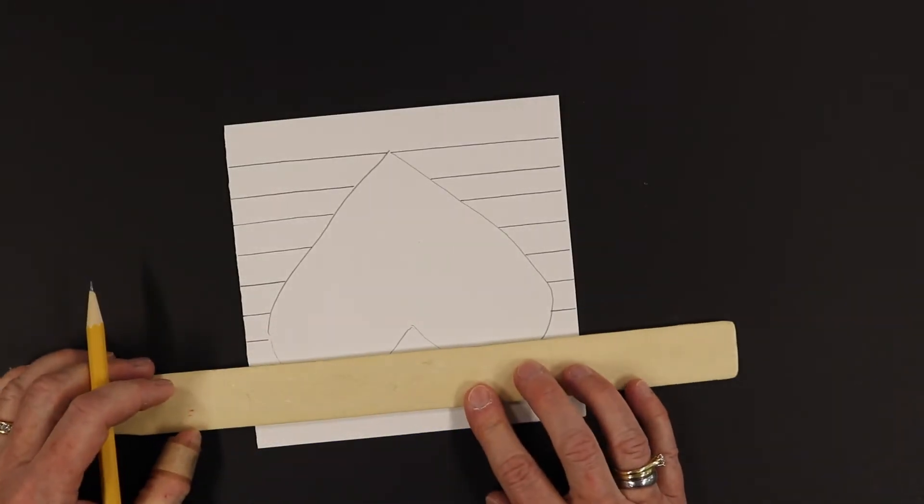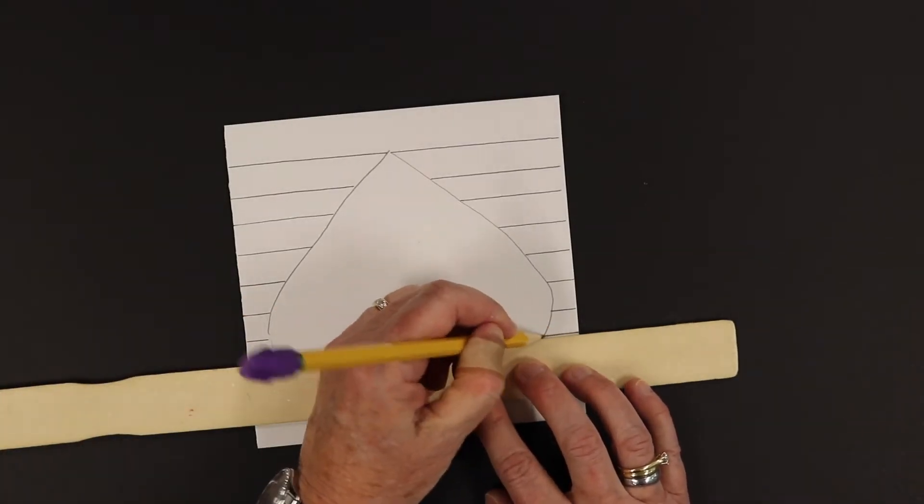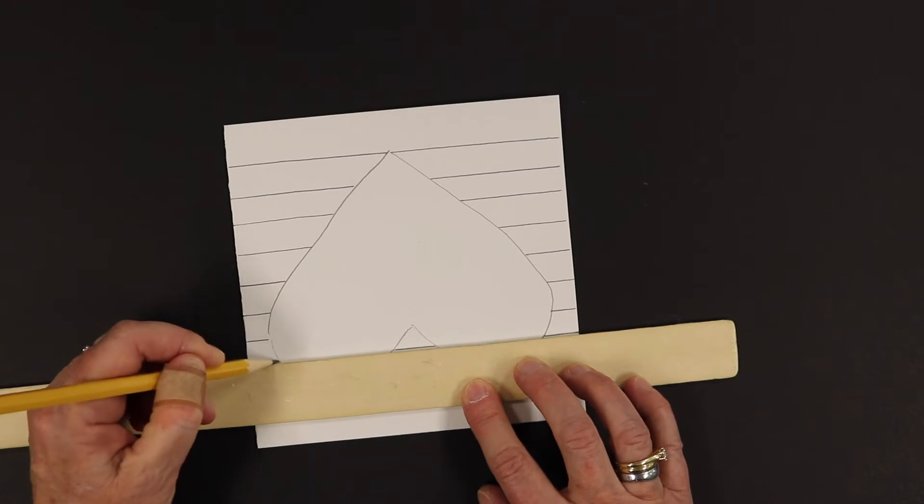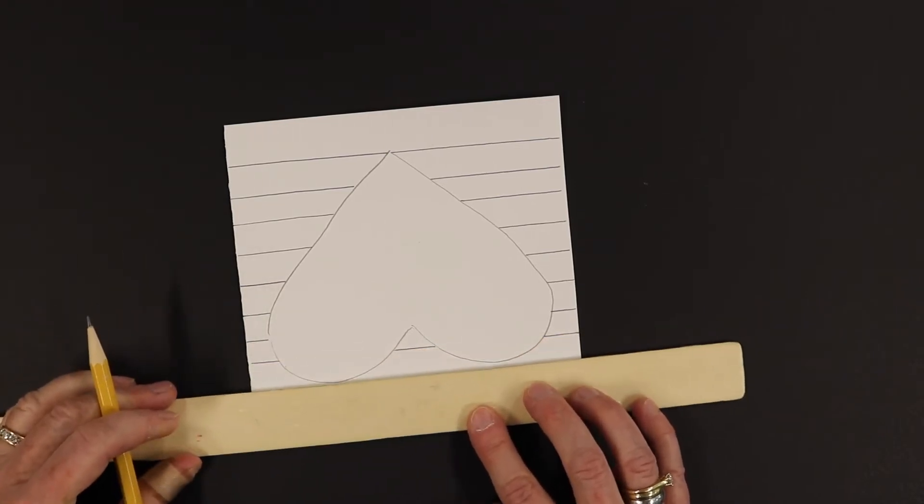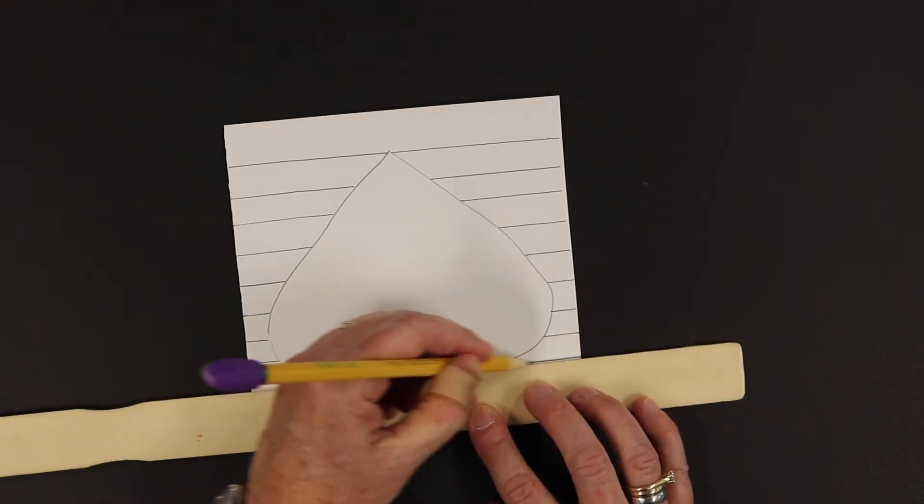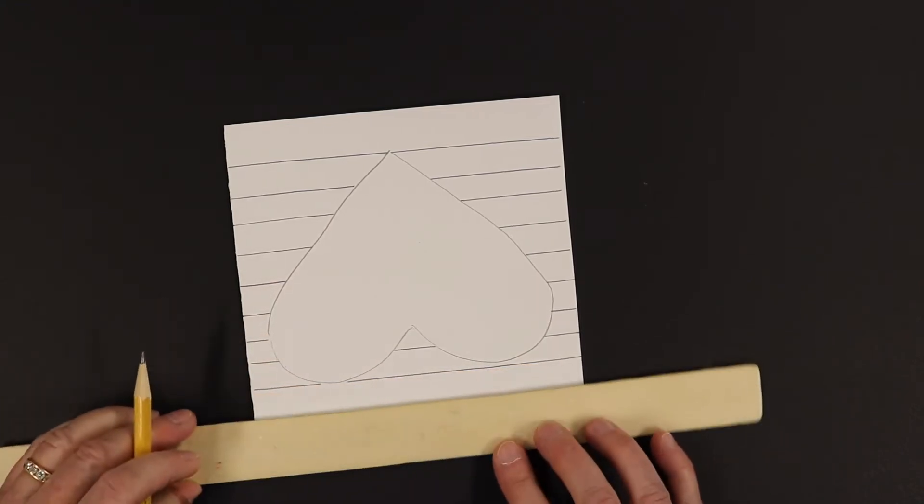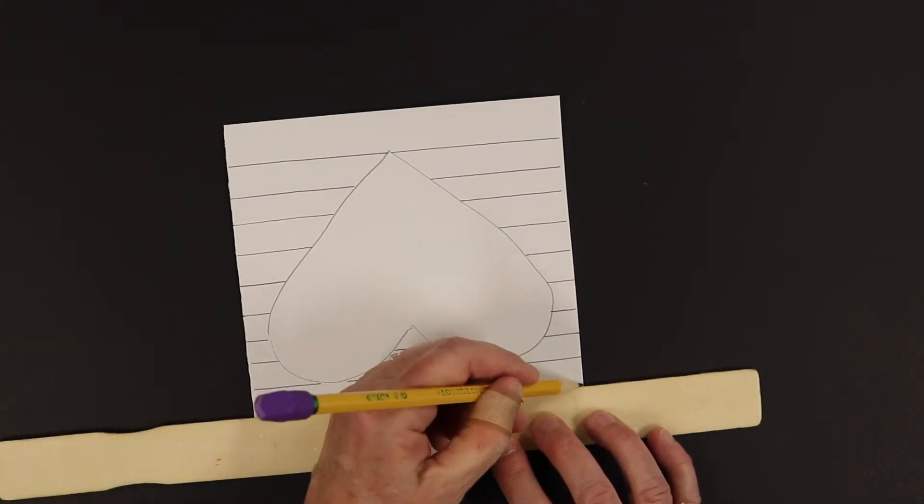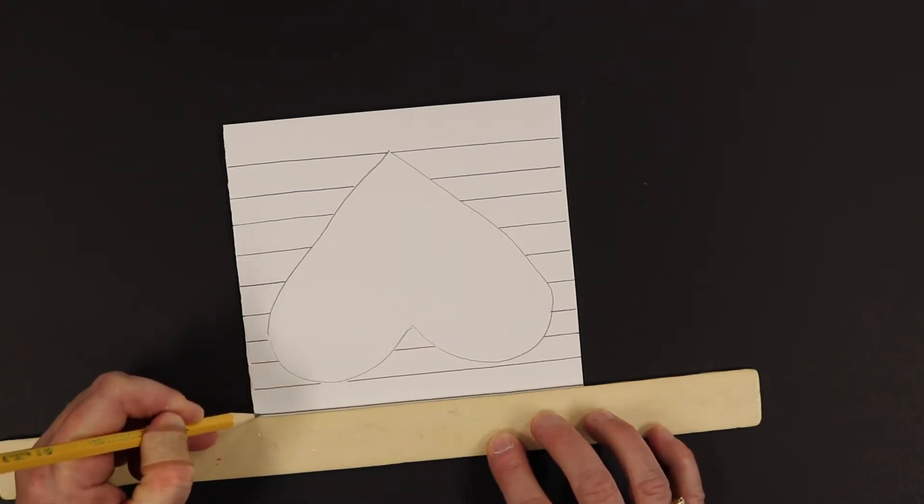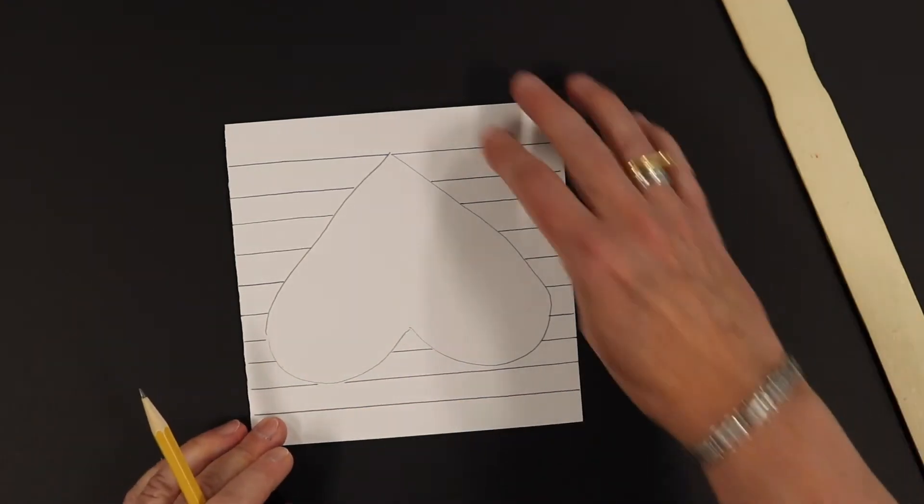I'm just going to turn it over, do the top part. Same thing, skipping over. I got room for one more. Alright, so I did all my horizontal lines.